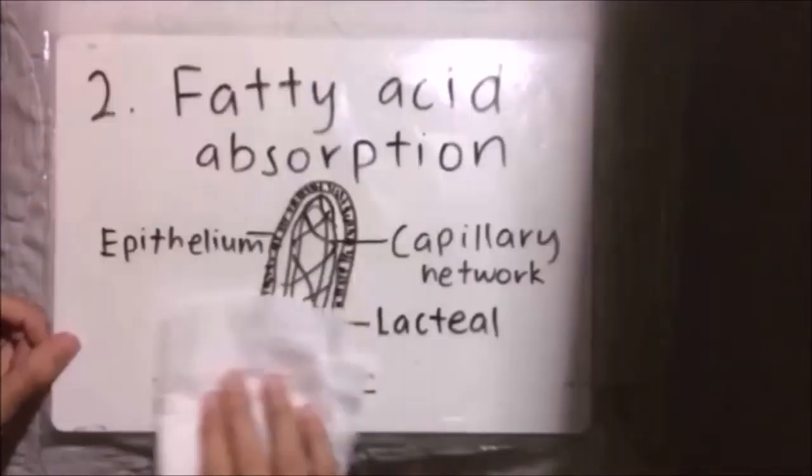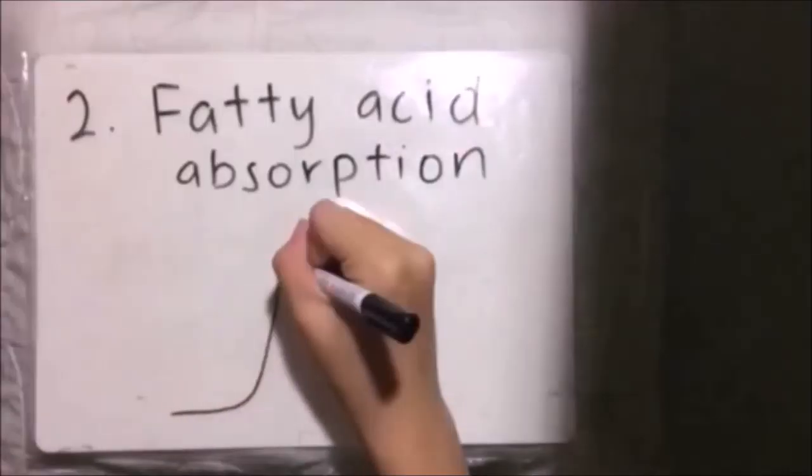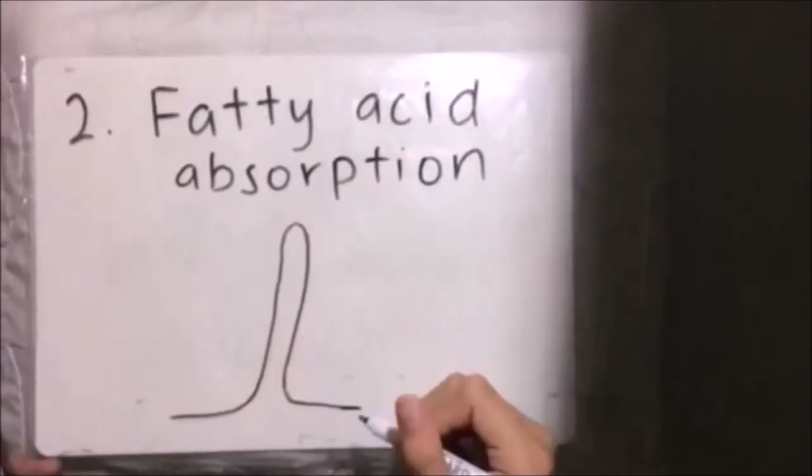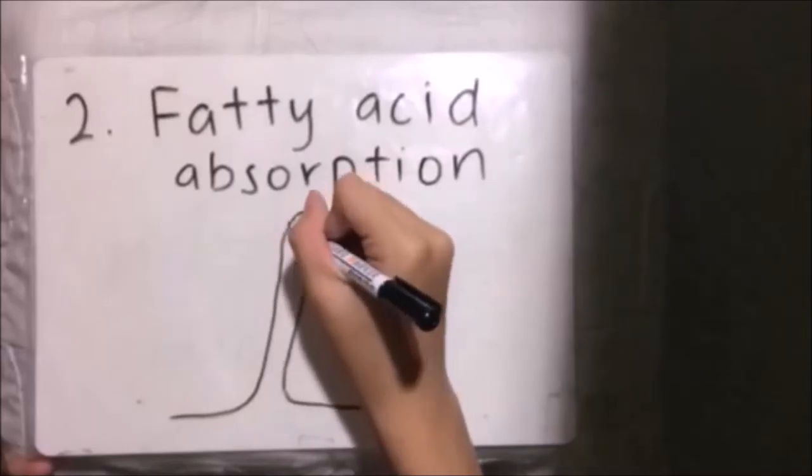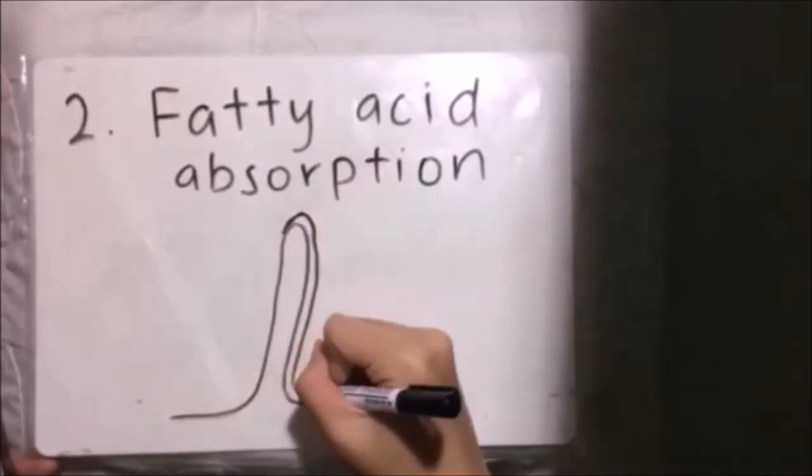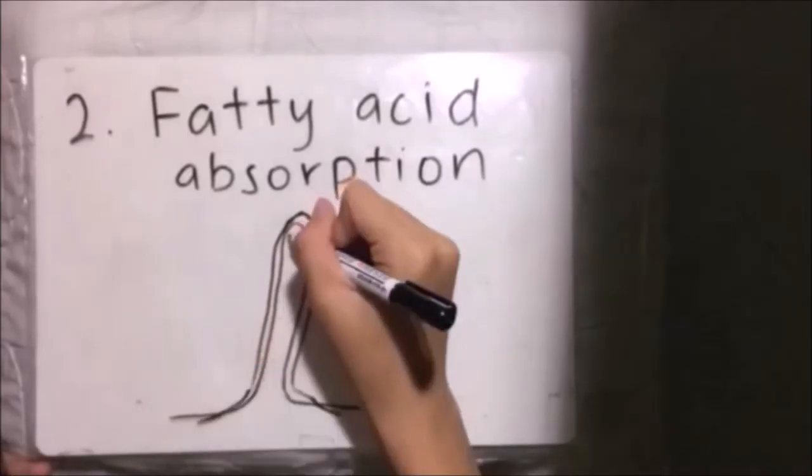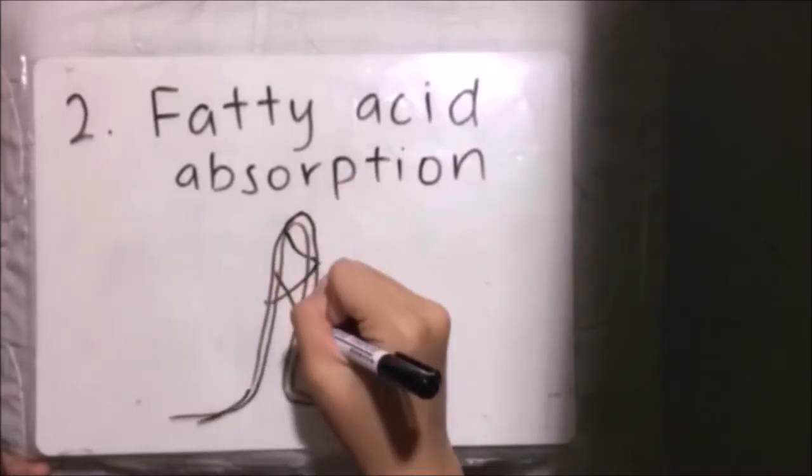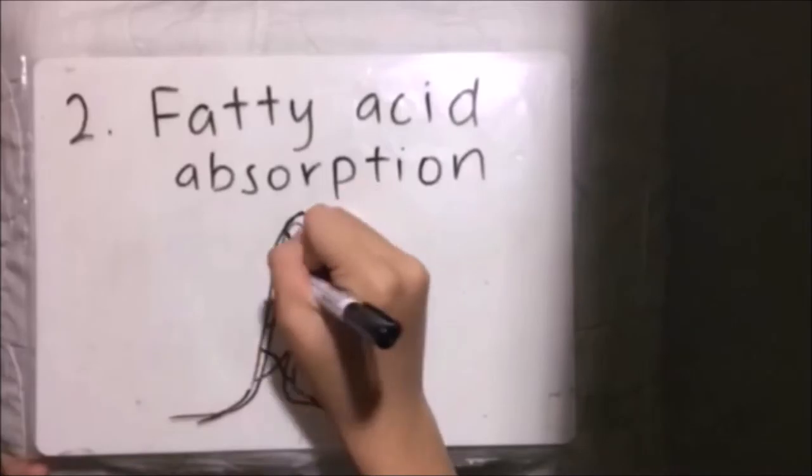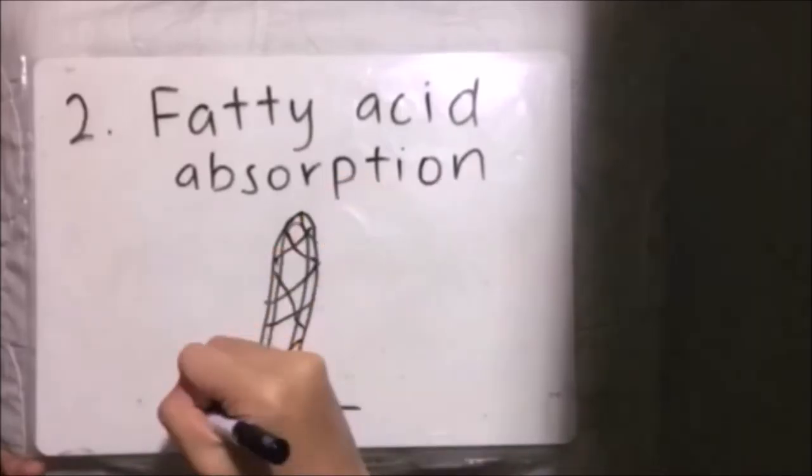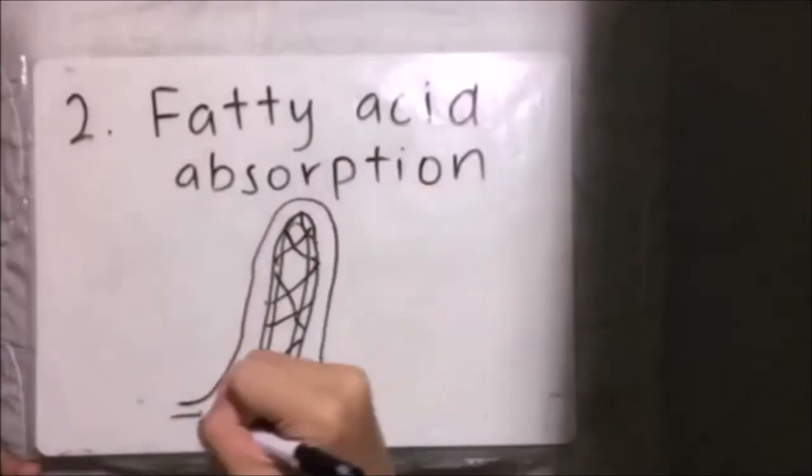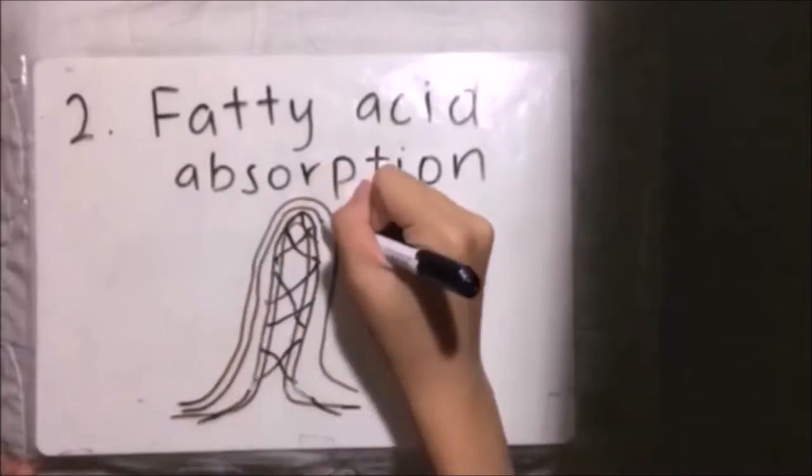The lymphatic system also absorbs fatty acids. Before triglycerides leave the epithelial cells after digestion, they are coated by proteins which results in the formation of chylomicrons. Chylomicrons are small globules composed of protein and lipid. The coating of protein gives the triglyceride a water-soluble coat and this allows the chylomicrons to travel outside of the cell.